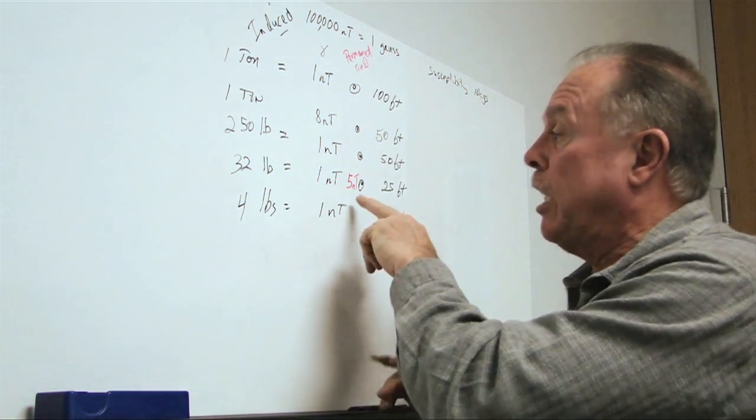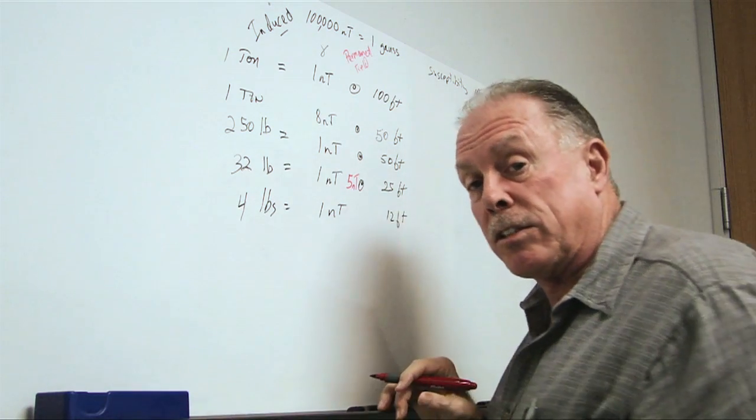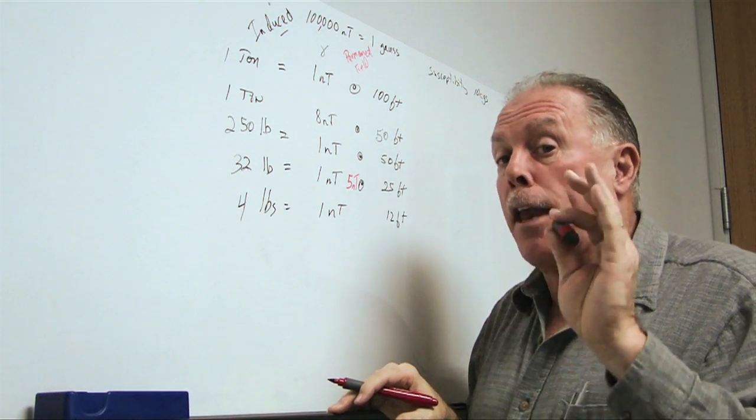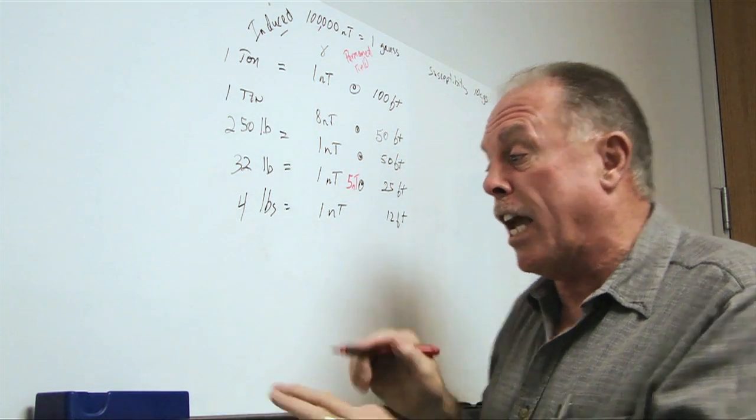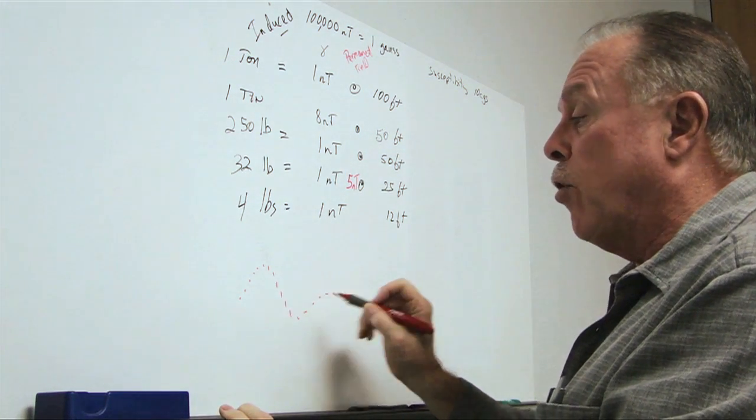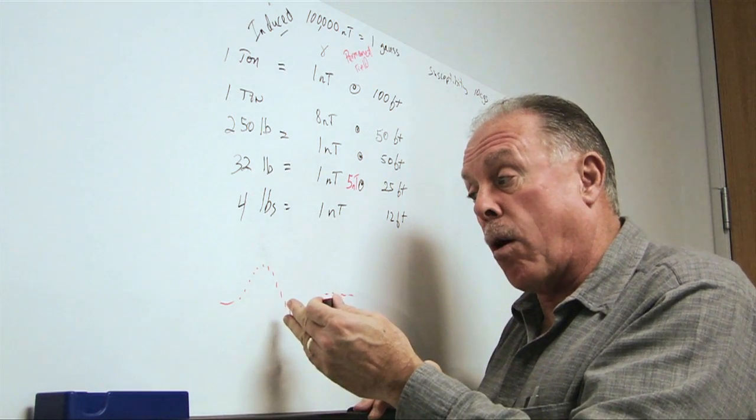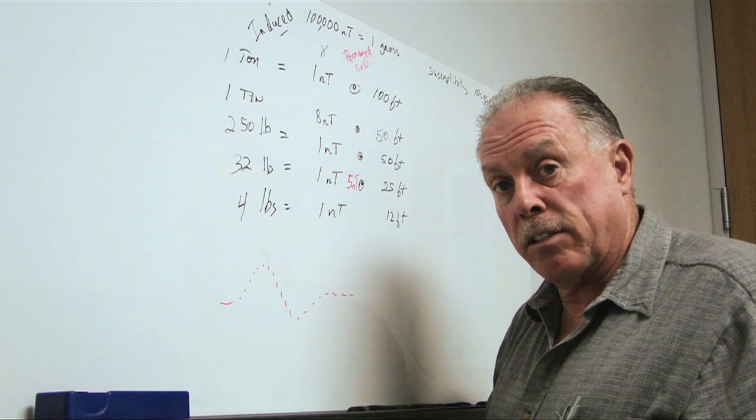So, now it's getting easier and easier to detect smaller items at greater distances, particularly if you have a high sensitivity and high speed magnetometer. The speed is important because we need to get enough readings over the anomaly in order to fully characterize its shape, because it is its shape, after all, that tells us something about its location and its mass.